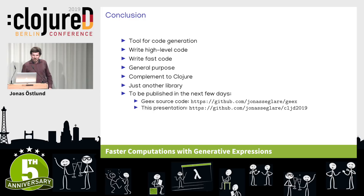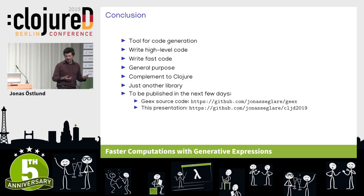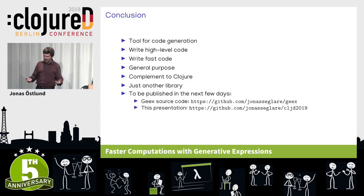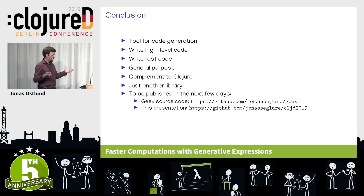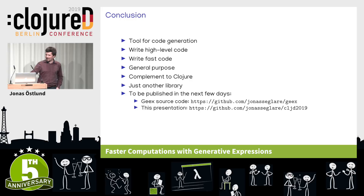In summary, I have shown a tool for code generation that lets you write fairly high-level code that generates fast code. It is general purpose — usable for things beyond fitting circles to points. It should be thought of as a complement to Clojure, something you use where you need performance improvements. It's just another library you can depend on, not a new language. I plan to publish the code in the next few days after cleaning it up. Thank you very much for listening.